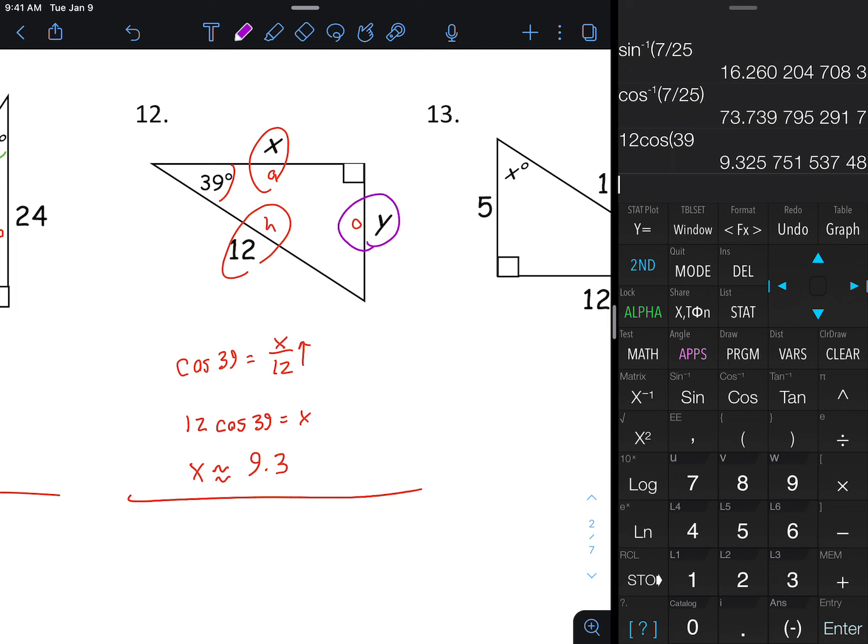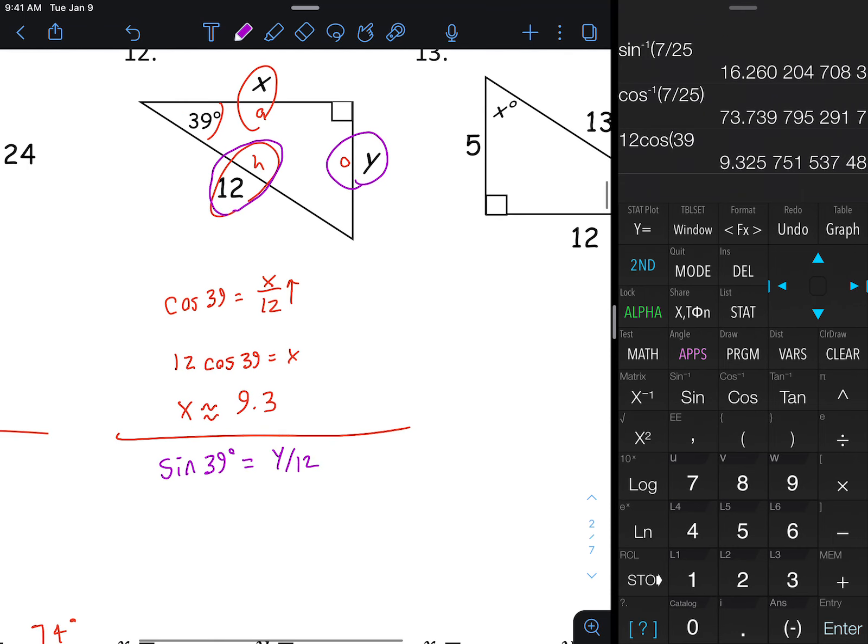For Y, you would use O, and then I'm going to reuse the H since we started with that. That would be sine this time, sine of 39 degrees, and then equals Y divided by 12. Multiply both sides by 12 since Y is in the numerator.